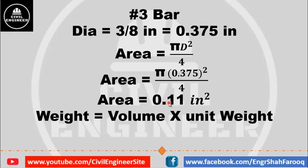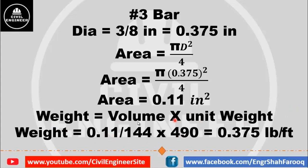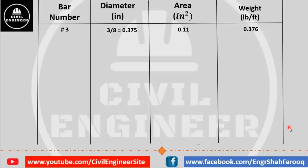To find the weight of bar per foot, we know that weight equals volume multiplied by unit weight. To calculate weight per foot, multiply unit weight by area instead of volume. The area of the bar is 0.11 in². To convert to square feet, divide by 12² (i.e., 144) and multiply by 490, which is the unit weight of steel in the FPS system. This gives a weight of 0.375 pounds per foot.